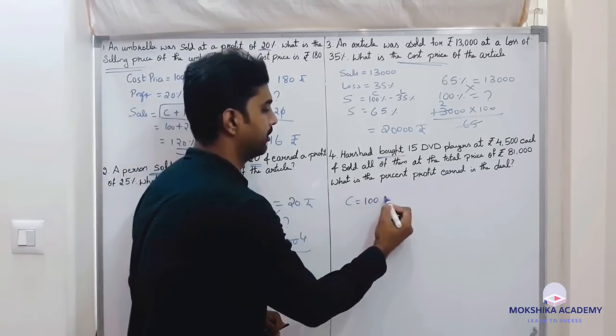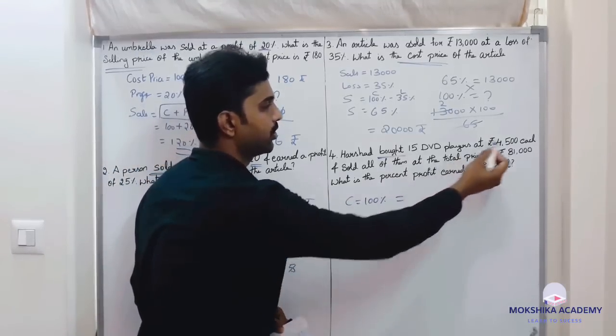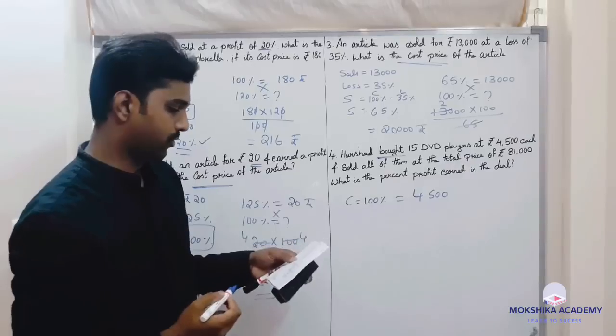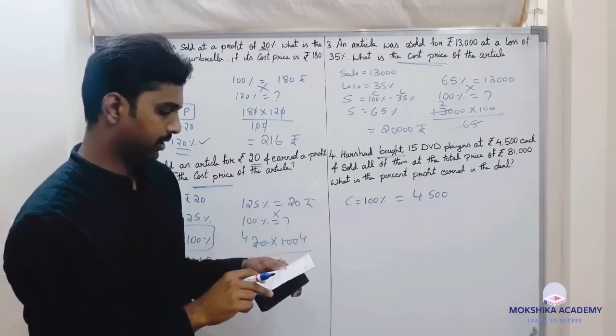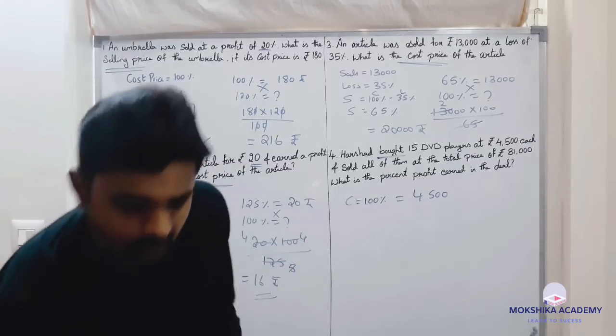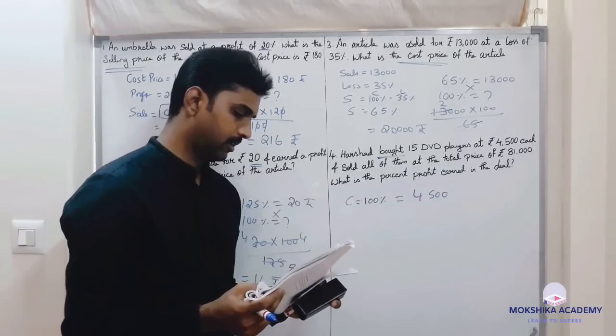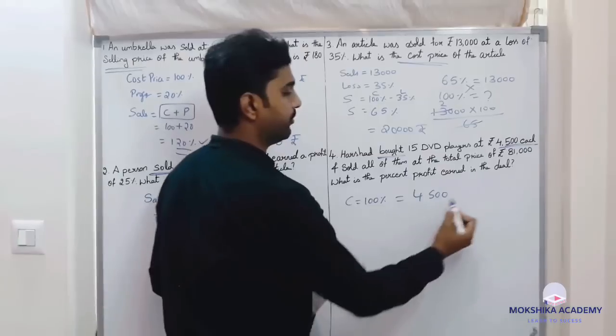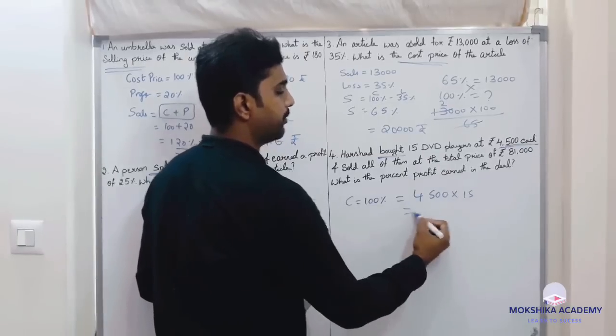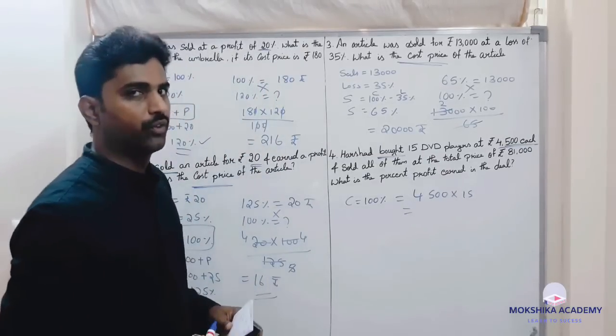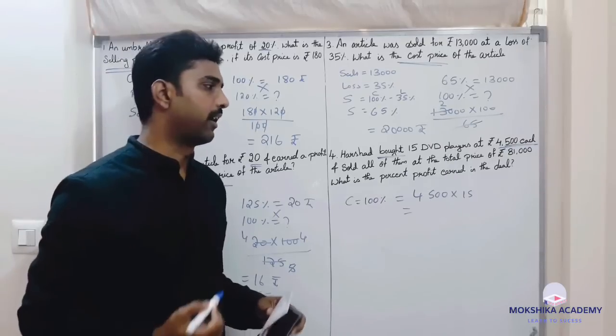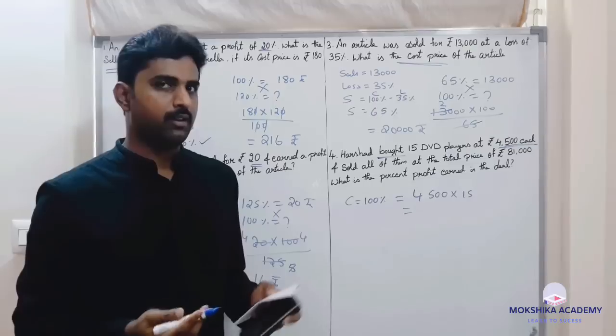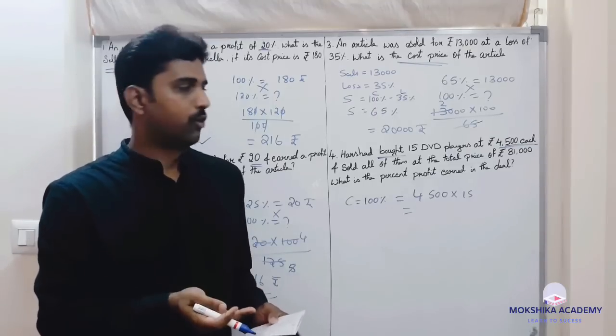It is 15 each, so 15 each means you need to multiply with 15. So 15 into 4,500: 4,500 into 10 is 45,000 plus 4,500.